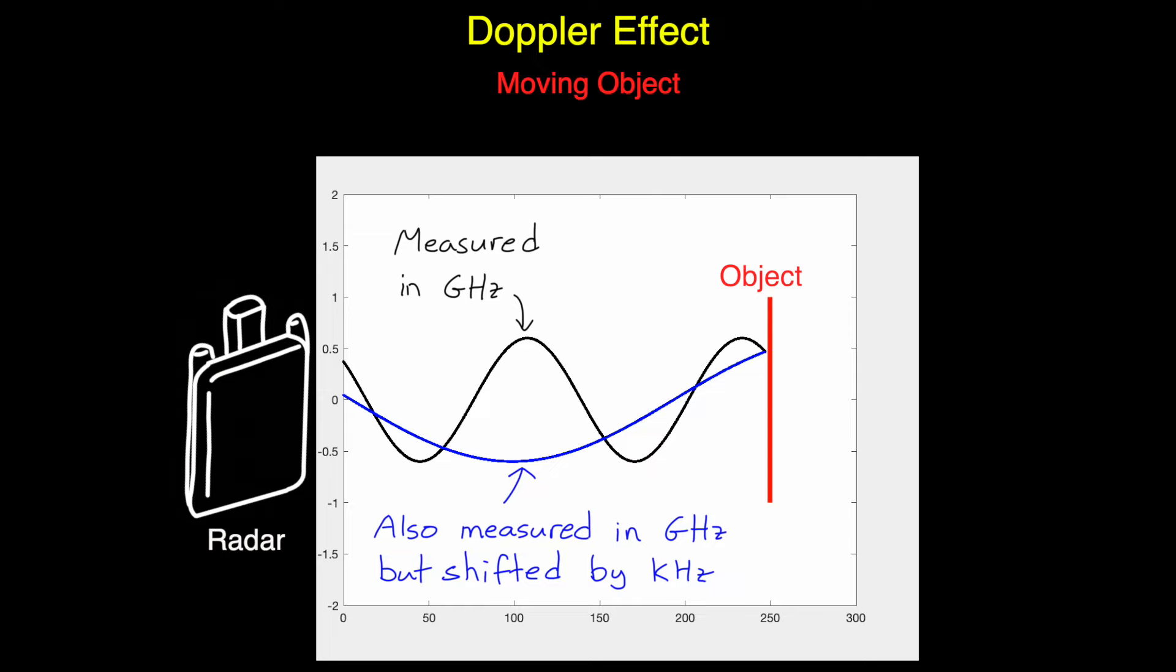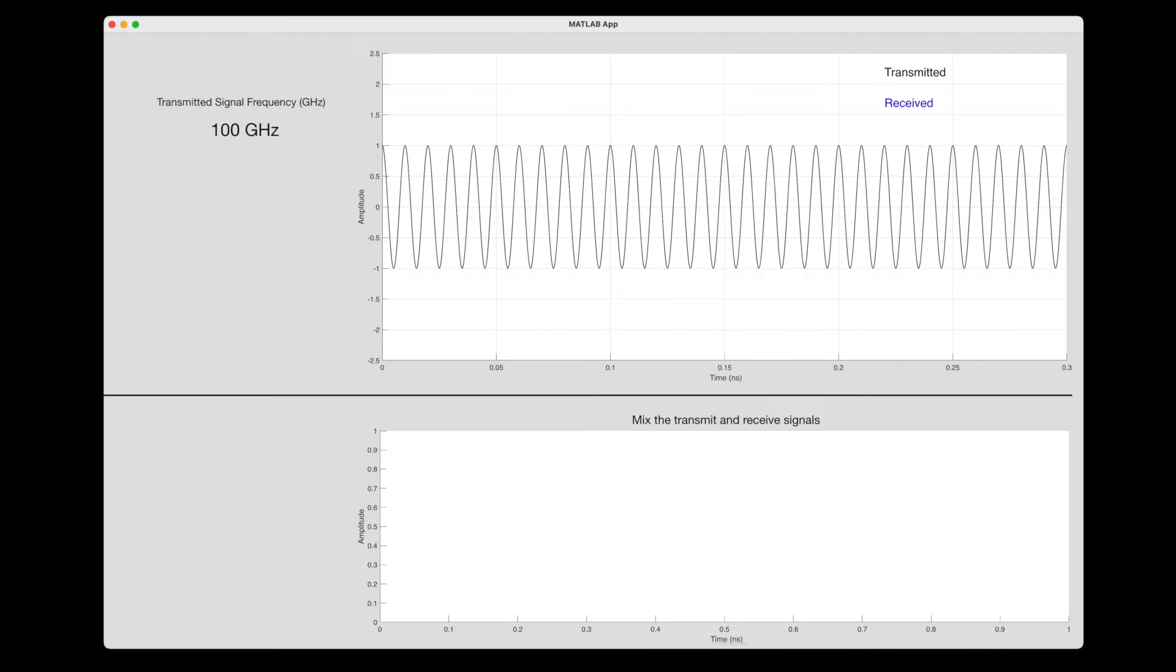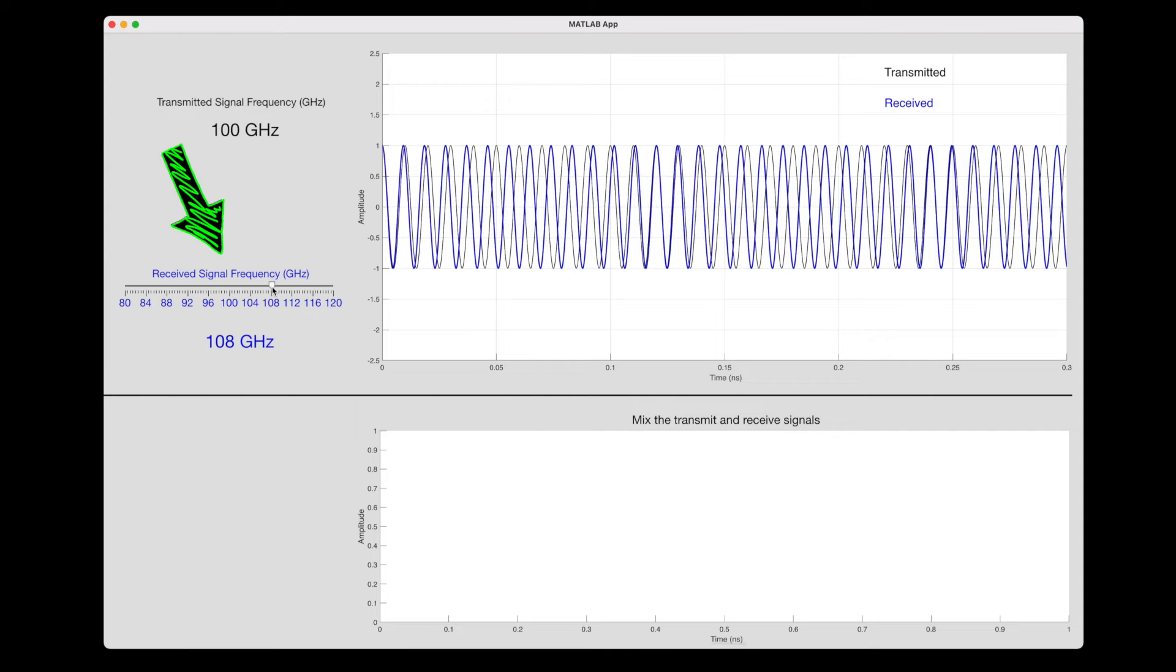But detecting really tiny frequency differences is made much easier by looking at beat frequencies. To show you how it works, I made this simple MATLAB app. The transmit frequency from the radar I'm setting to 100 gigahertz. The received signal comes back at a different frequency, which I can adjust with this slider. So here I'm going to set it to 108 gigahertz, which means that the object is moving towards the radar. This Doppler shift is much larger than anything an autonomous vehicle will see, but I want to be able to show the beat frequency easily on this screen.